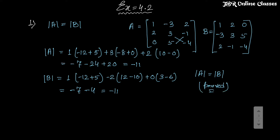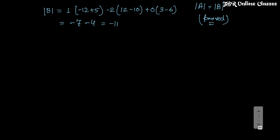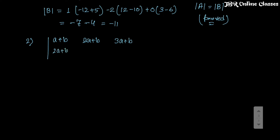Now moving on to problem number 2: without expanding, find the value of the determinant with entries (a+b), (2a+b), (3a+b) in the first row; (2a+b), (3a+b), (4a+b) in the second row; and (4a+b), (5a+b), (6a+b) in the third row.